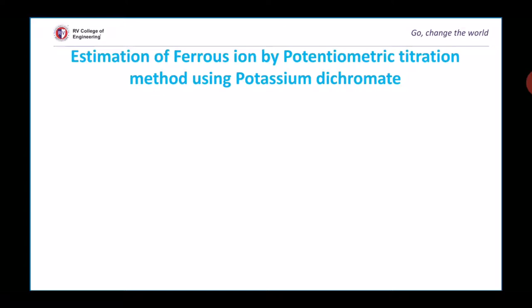Now we will use this potentiometric technique to find the amount of iron present in the given solution using potassium dichromate. Here, analyte is ferrous ion solution whereas titrant is potassium dichromate.